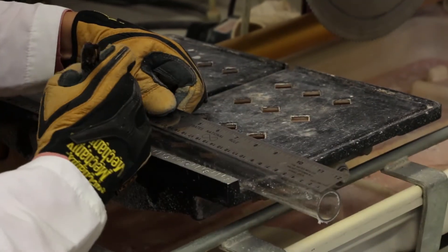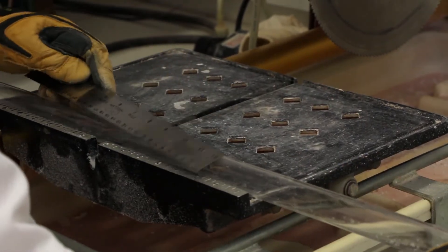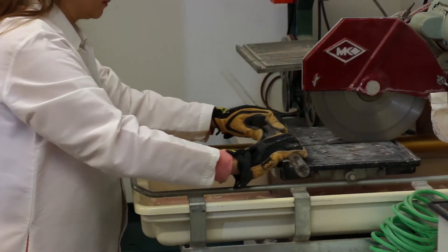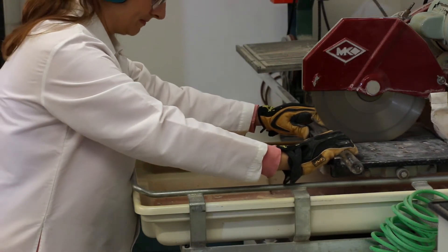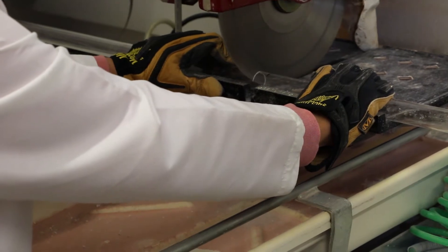Using a tile saw, cut the transparent plastic tube into 300 mm long columns for the splitting tensile strand test and 320 mm long columns for the capillary water absorption test.